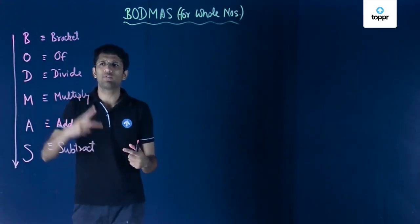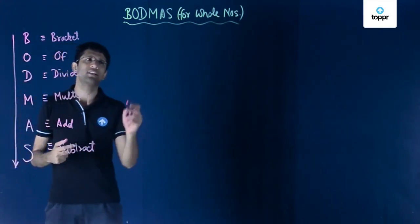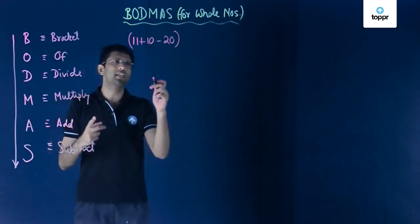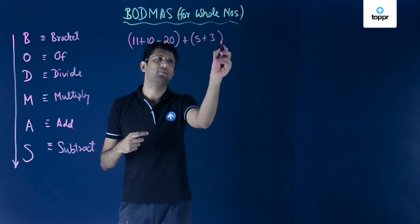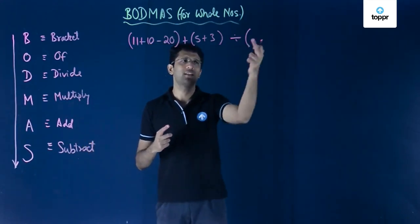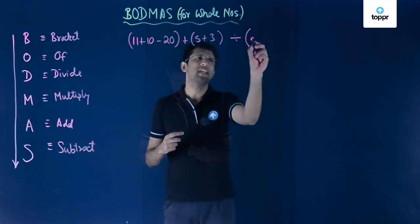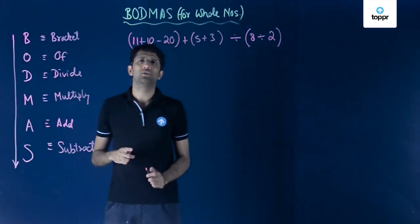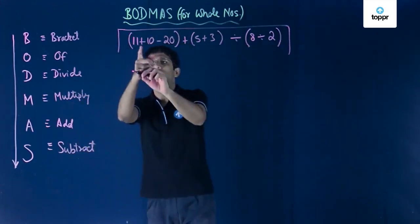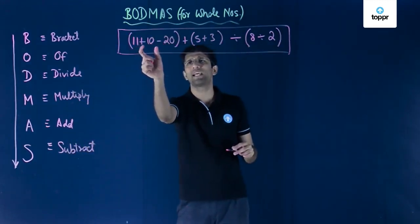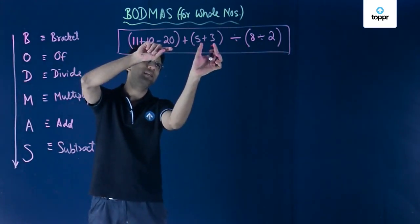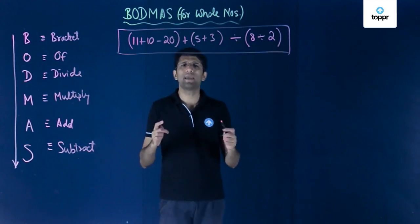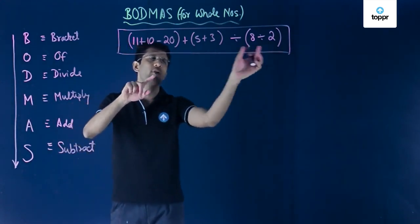Let us now see another example using the BODMAS concept. The expression is: the first bracket has 11 plus 10 minus 20; to this we add a second bracket containing 5 plus 3; and then we divide by a third bracket containing 8 divided by 2. This is a big expression, so we determine the order in which we apply the operators.